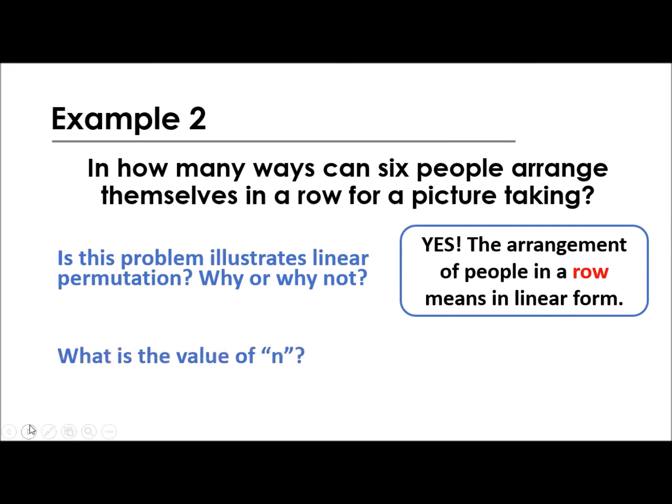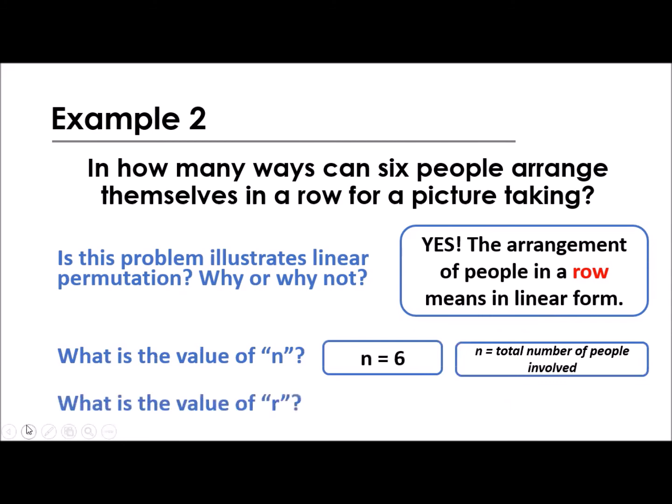And what is the value of n? How many people are involved? We have 6, so n is equal to 6. And what is the value of r? 6 as well. Because everyone is included. Those 6 people are all involved in the picture taking.